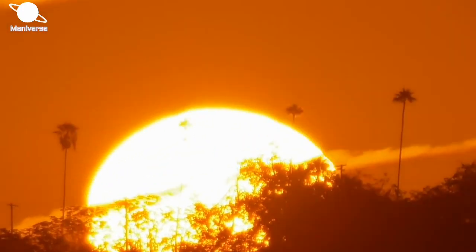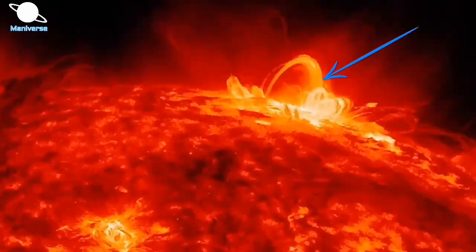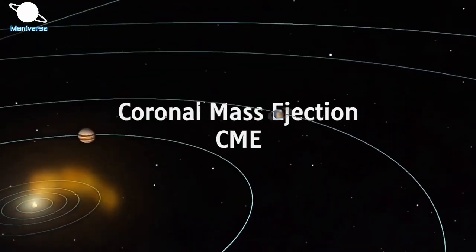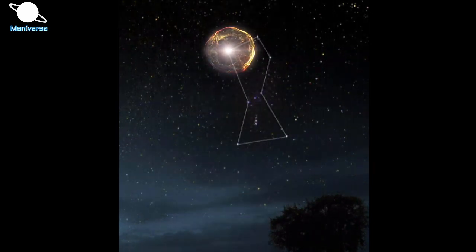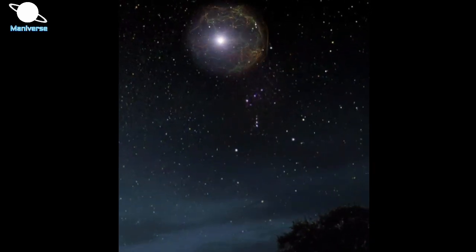Our own star, the Sun, sometimes launches huge clouds of plasma into space called coronal mass ejections or CMEs. At Betelgeuse, it's at an incredible scale with its SME estimated to blast off 400 billion times as much mass.